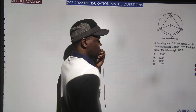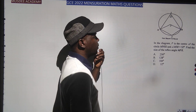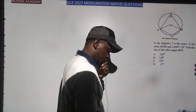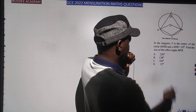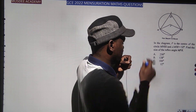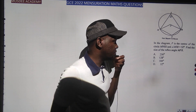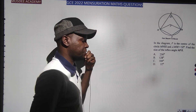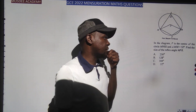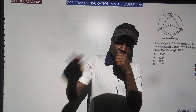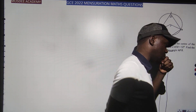Now back to what we are actually doing. In the diagram, P is the center of the circle MNRS. The measure of angle MSR is 52°, which is at the circumference. The question asks us to find the size of the reflex angle MPR. It is the same concept — reflex — as we've been using in this examination.